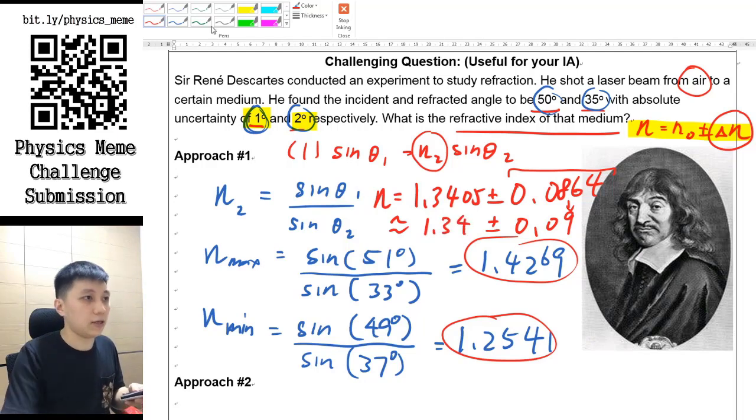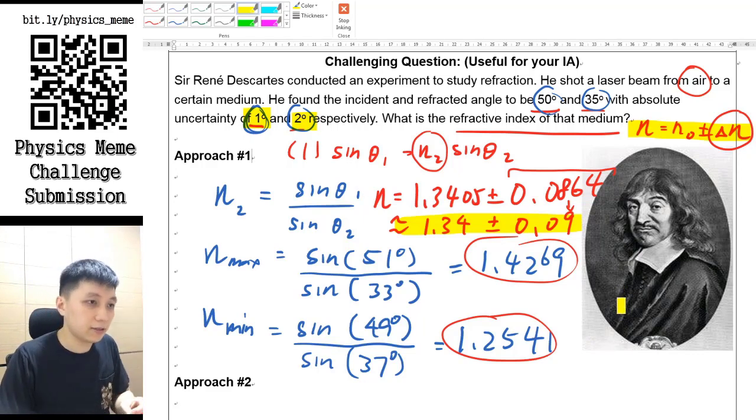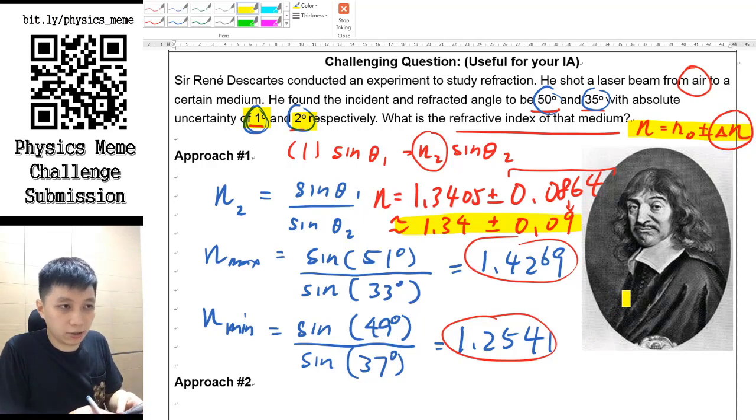So this will be the final answer for your result. That means for your refractive index you have such a range, which tells you that the actual percentage error, if you really want to calculate, then that is going to be 0.09 / 1.34.